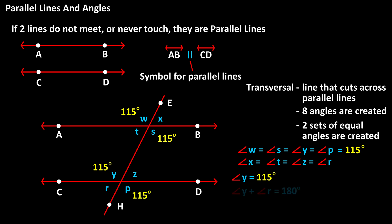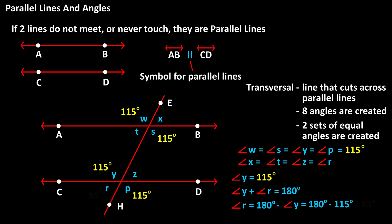And since angle Y and angle R together form a straight angle, which has a measurement of 180 degrees, angle R will equal 180 degrees minus angle Y, or 115 degrees. So angle R equals 65 degrees. Since angle R is equal to angles X, T, and Z, then angles X, T, and Z are also equal to 65 degrees.